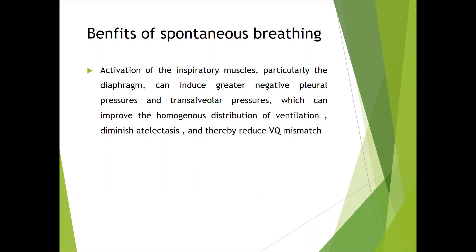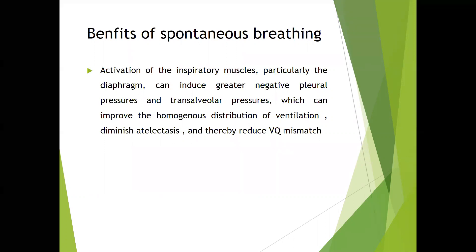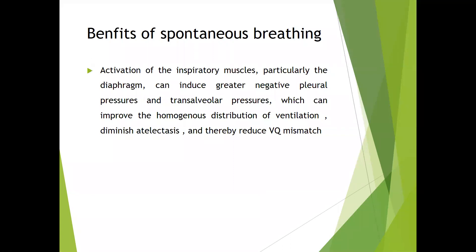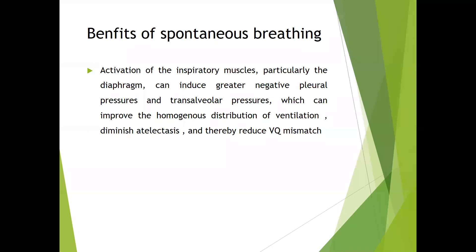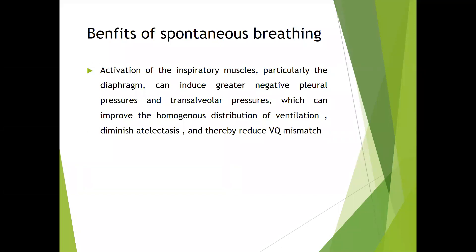Activation of the respiratory muscles — the biggest being the diaphragm — causes the diaphragm to contract, creating a vacuum that leads to greater negative pleural pressure and trans-alveolar pressure. This improves homogeneous distribution of ventilation and diminishes atelectasis. More negative pleural pressure allows more space for the lungs to expand, making inspiration easier. Areas that were atelectatic start to open up, improving VQ mismatch.